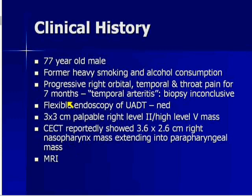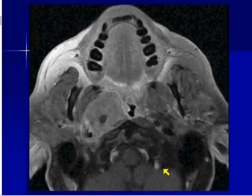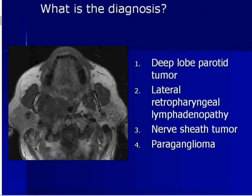Now here we've got a problem. They look into the patient and they see no tumor, and yet CT is reporting that there is a nasopharyngeal mass that's fairly large. So this patient comes to us, and he has an MRI. Check out this lesion — this is pre-contrast T1, post-contrast T1 fat sat. So what's the diagnosis here?